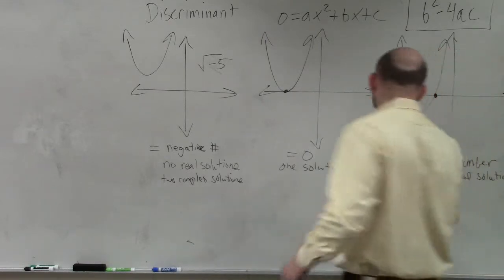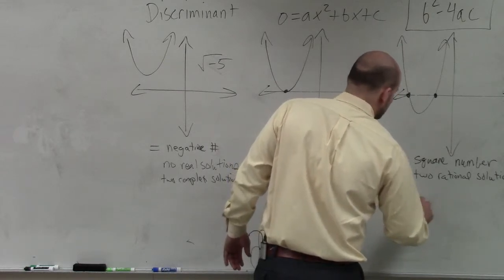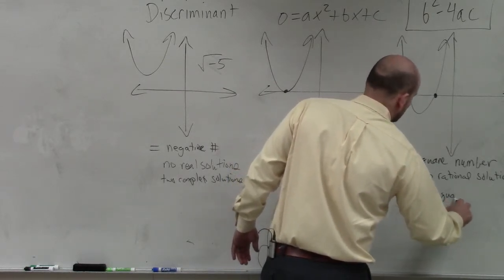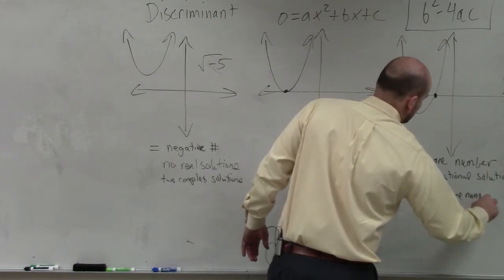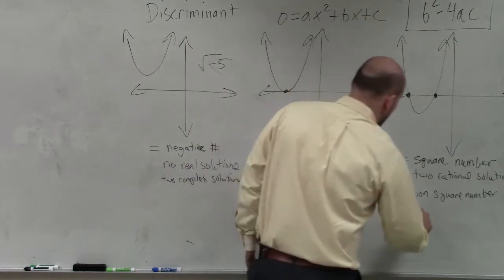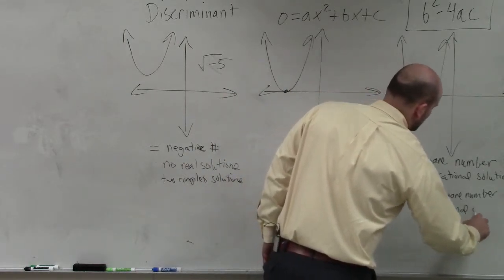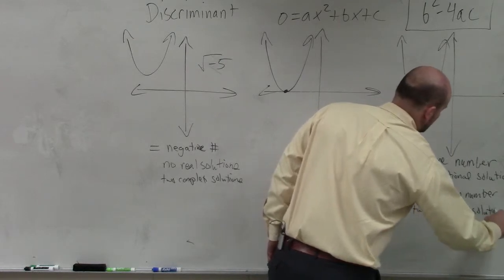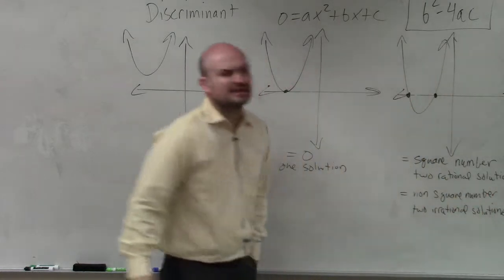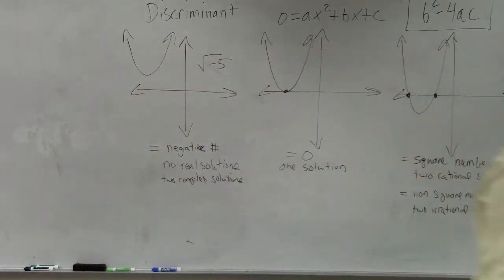If your discriminant equals a non-square number, if your discriminant equals a non-square number, then you have two irrational numbers, or two irrational solutions. What are irrational solutions? The square root of 8 is irrational. Pi is irrational. The square root of 2 is irrational.